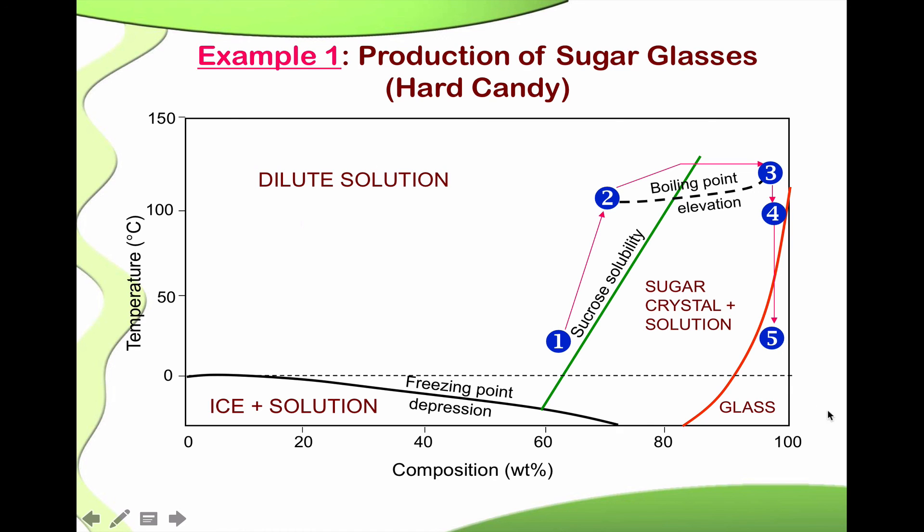So, this is basically how we can show, how we can apply the state diagram to show the process, the processes and the changes that happens during the production of hard candy, where the final product is in the form of amorphous state or a sugar glass.